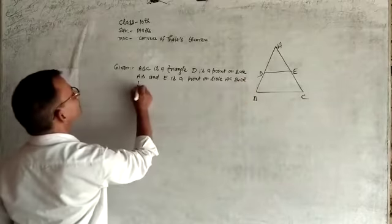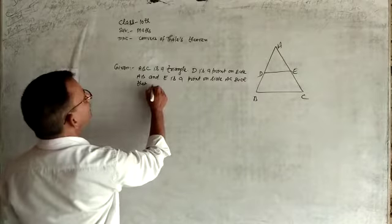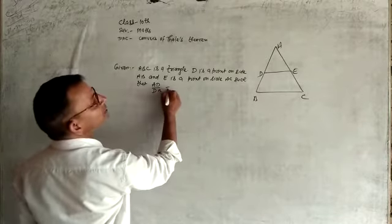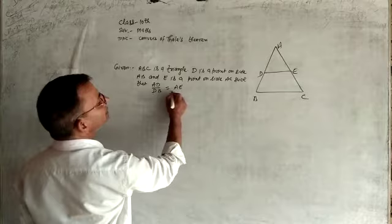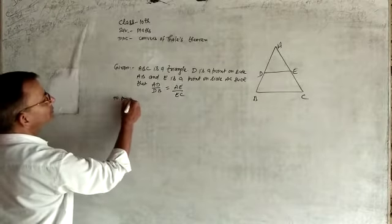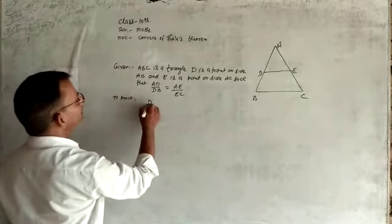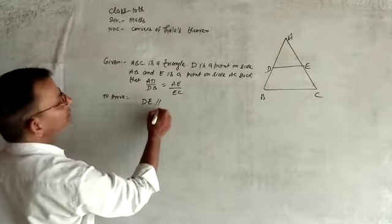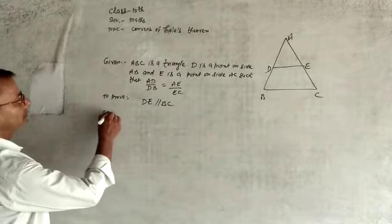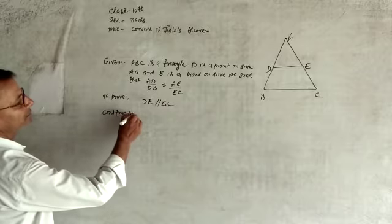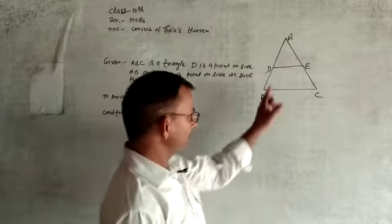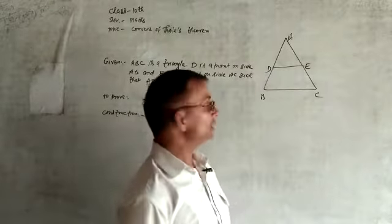Given: AD upon DB is equal to AE upon EC. To prove: DE is parallel to BC. Proof: Suppose DE is not parallel to BC.